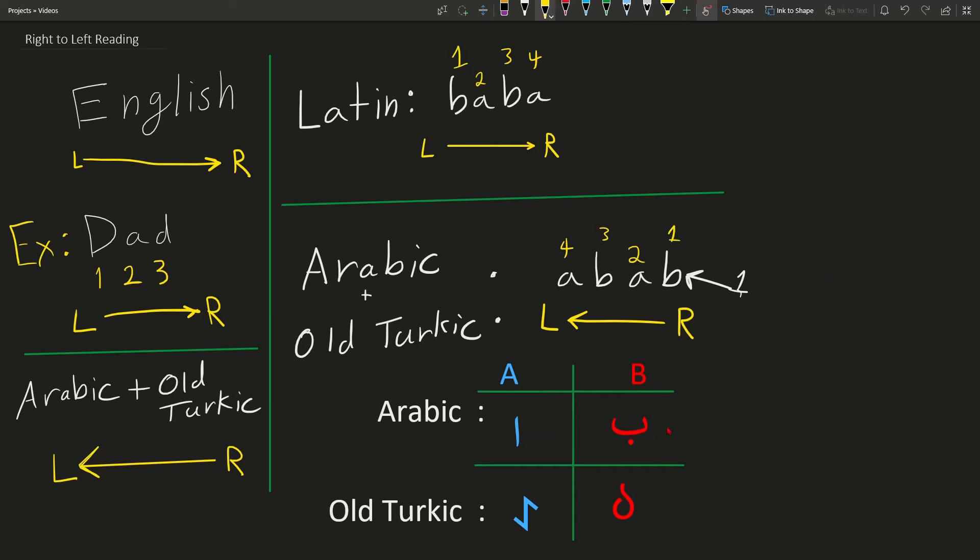So, I've given you two letters for each script. For Arabic, we have the letter A represented with this vertical line, and then we have the letter B represented with this glyph. In Old Turkic, the letter A is represented with this symbol, and the letter B is represented with this symbol. Now, why don't we scroll down and look at a few examples where we can see the principle of right-to-left reading in action.